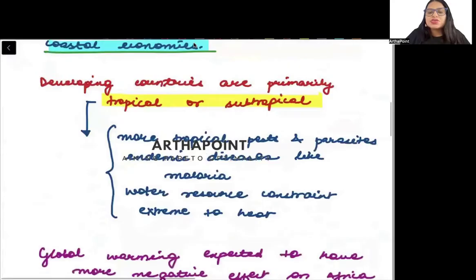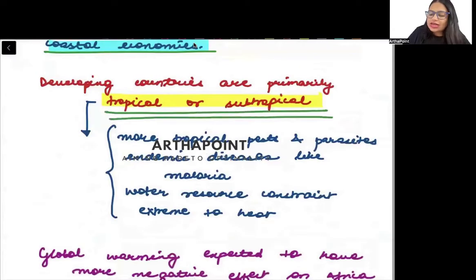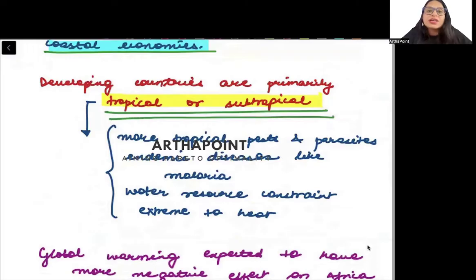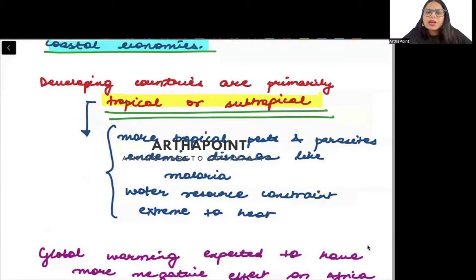Developing countries are primarily tropical or subtropical. We have seen that they are majorly developing countries and not developed countries. But what is a tropical country, what do we mean by a tropical zone?